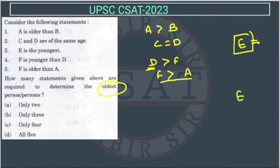Then we need - we have F, F is older than A. And we know about B also, that B will come here.